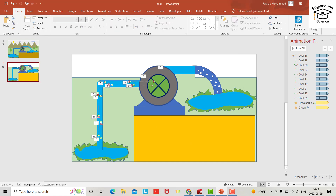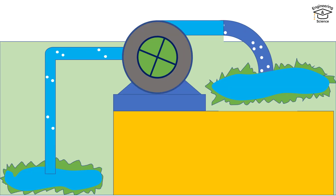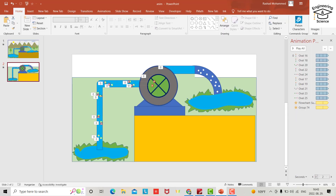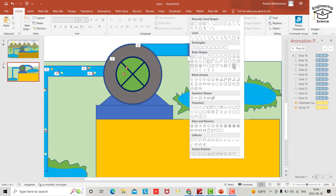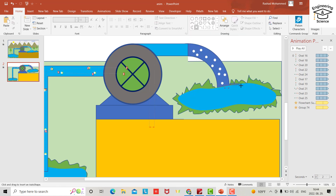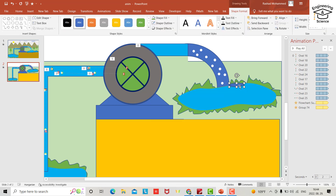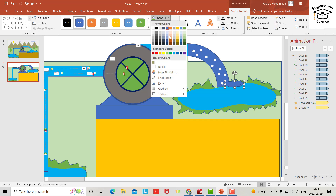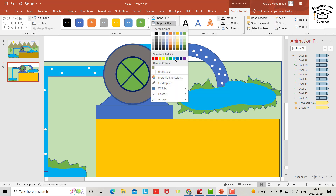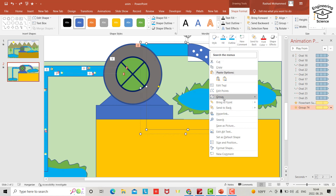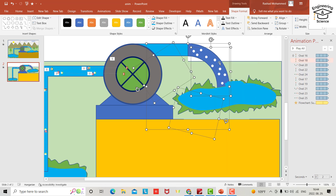Let's see the animation — yes, good. I also want to provide a cloud form here. Set shape fill to a water color, no outline, then group the elements.